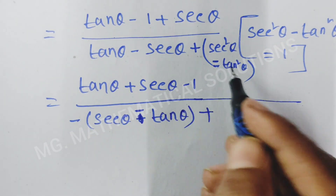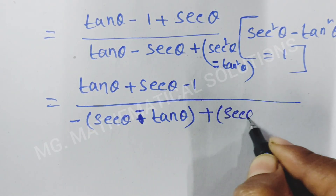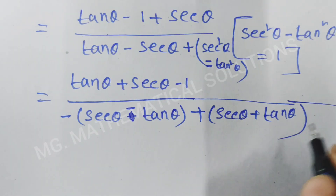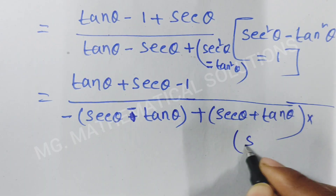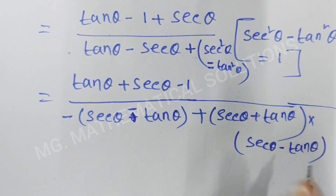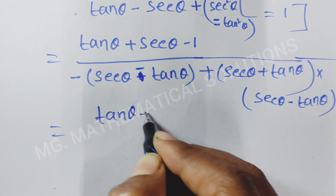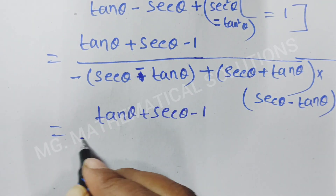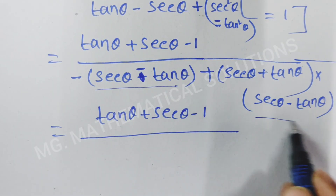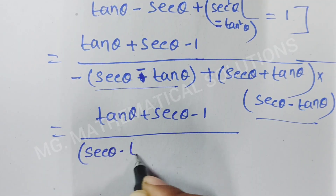Now we use the formula a² minus b² equals (a+b)(a-b). So sec²θ minus tan²θ becomes (sec θ plus tan θ) times (sec θ minus tan θ). Then we have tan θ plus sec θ minus 1, over taking common (sec θ minus tan θ), times (sec θ minus tan θ), giving (sec θ minus tan θ) times (sec θ plus tan θ).